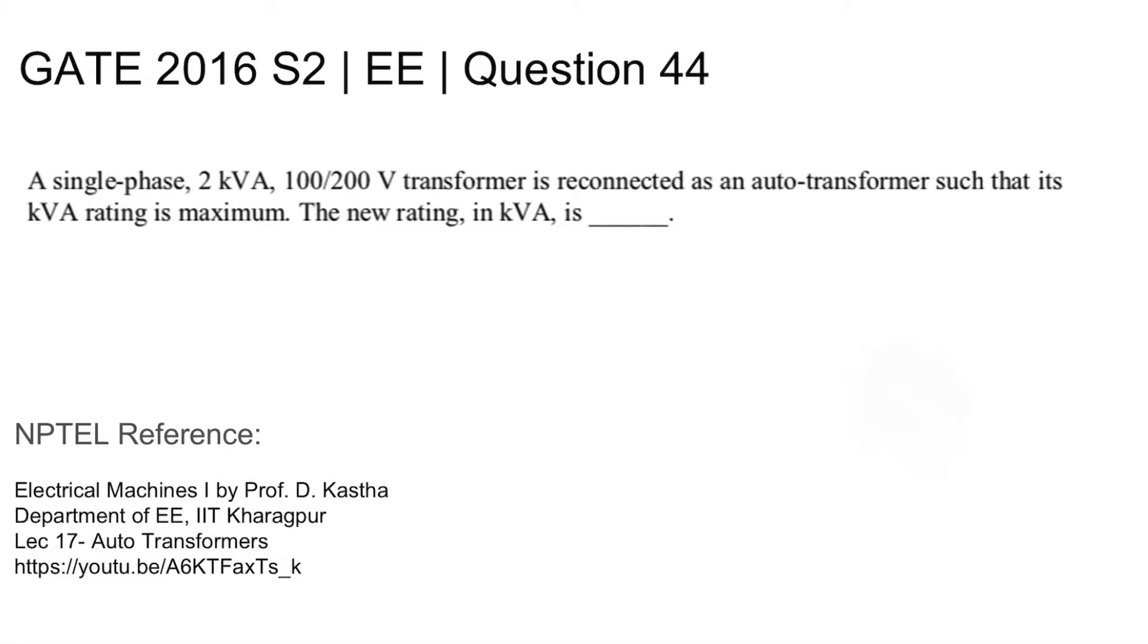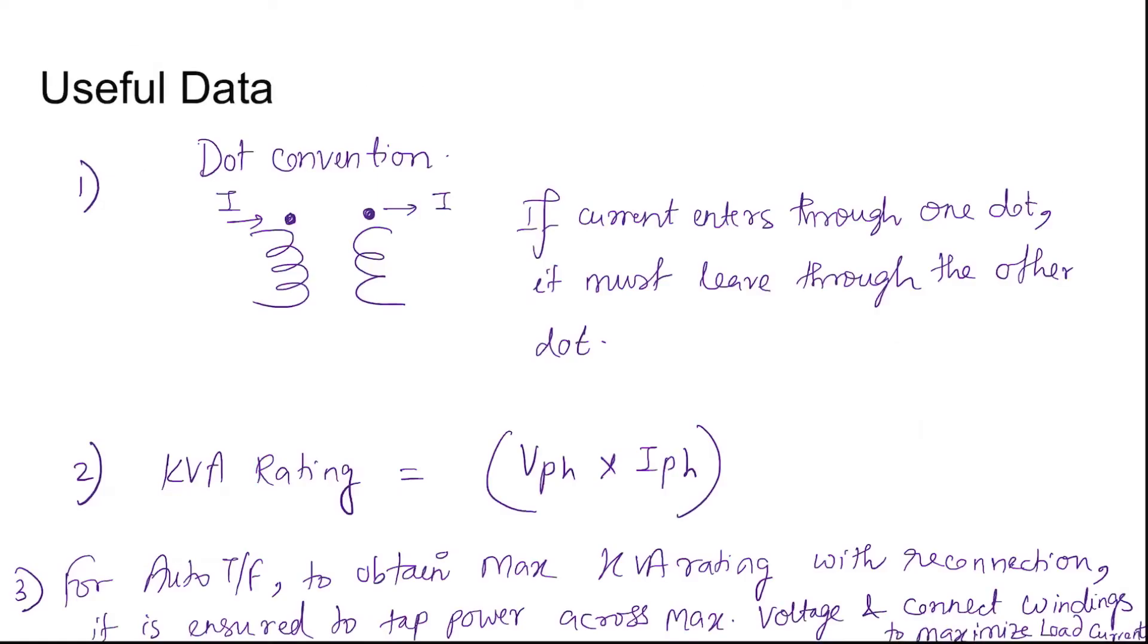Now, dot convention you need to understand for solving this question: if two windings are there with dot conventions like this, it implies that if current enters through one winding at one dot, it must leave through the other dot on the other winding. So if current enters one dot, then it must leave the other dot.